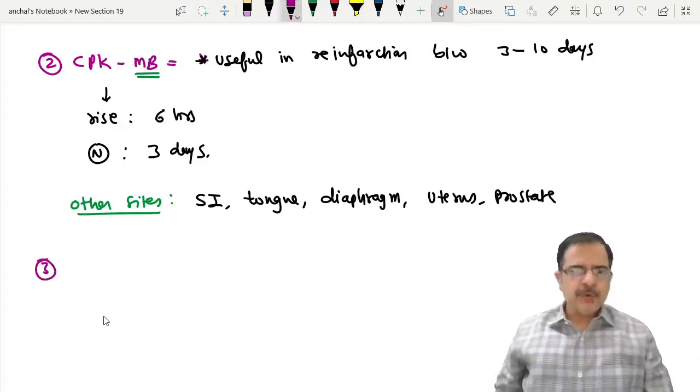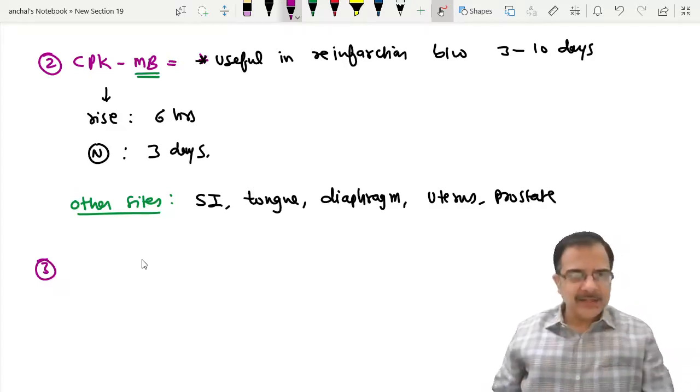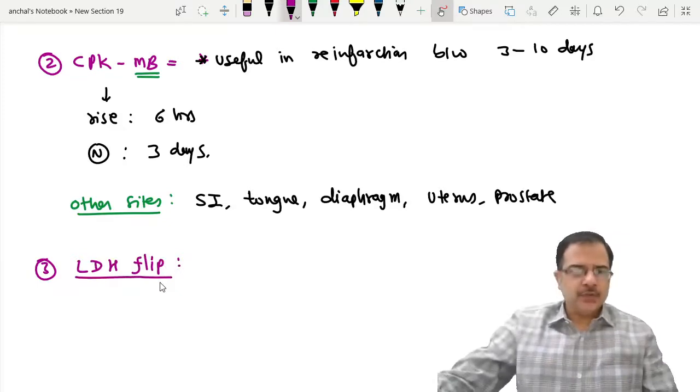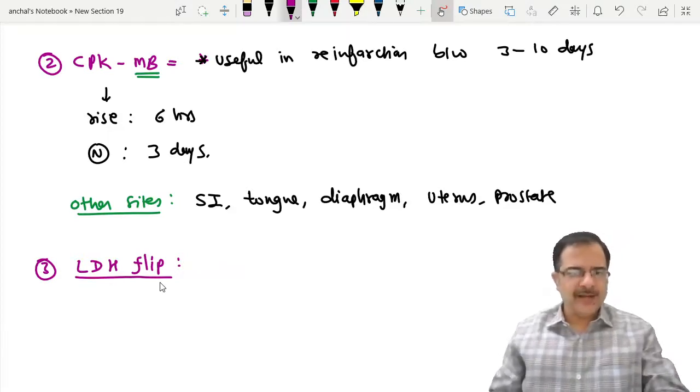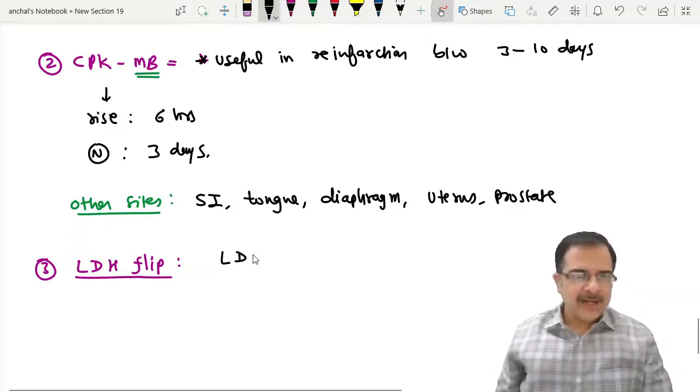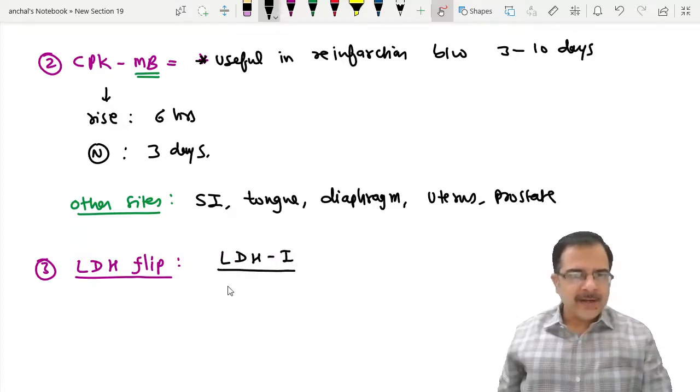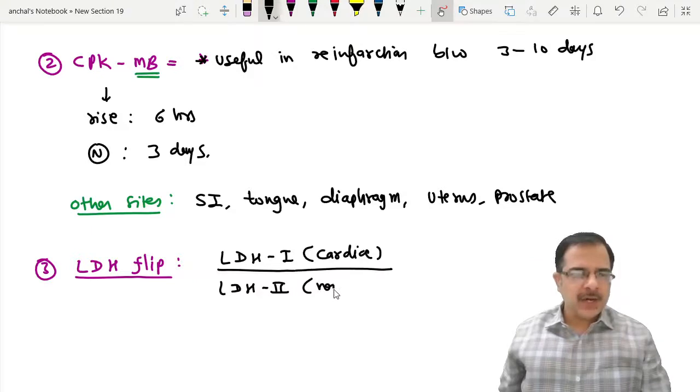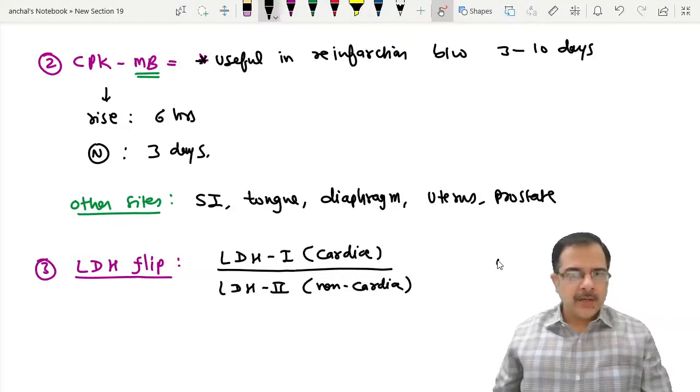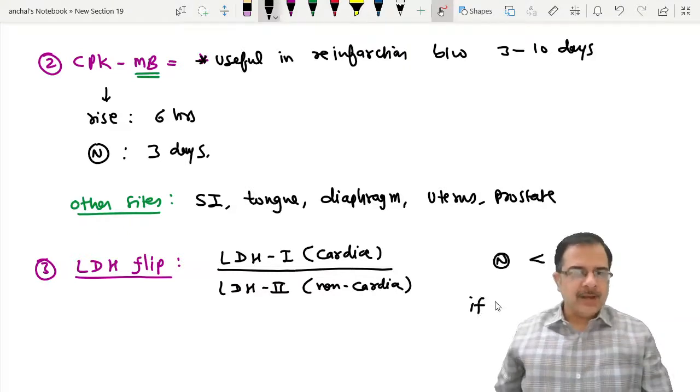Other markers, though practically we are not doing those, include LDH flip. LDH flip is basically the isoforms of LDH. When we take LDH1, the cardiac fraction released from heart muscles, and divide by LDH2, which is non-cardiac, normally this ratio is less than one. But if MI, there will be a flip, meaning this ratio will become more than one because the cardiac source is there.